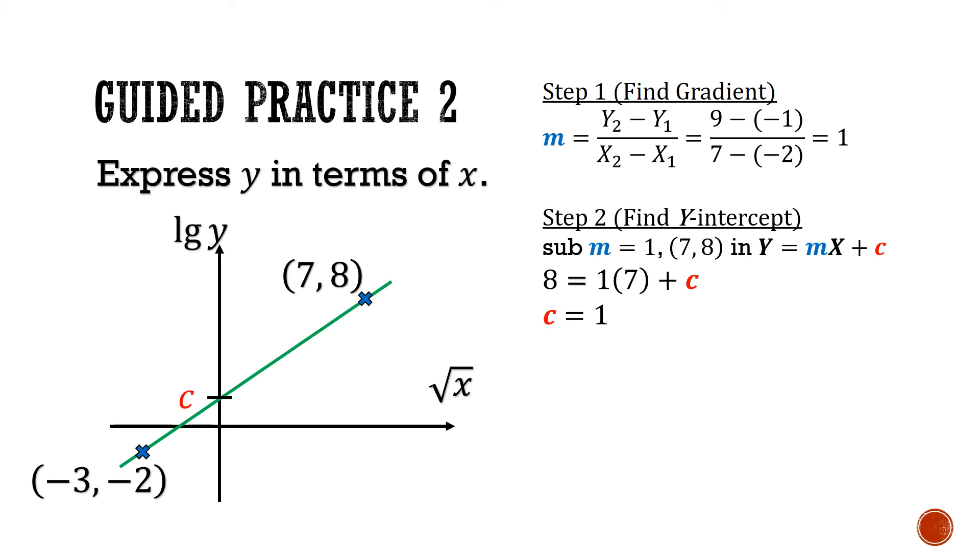Moving on to step 3. Now we have the gradient and the y intercept. We'll substitute them all into the equation big Y equals m big X plus c. This gives us big Y equals 1 big X plus 1.